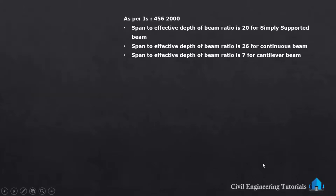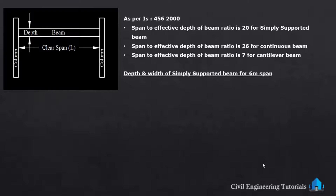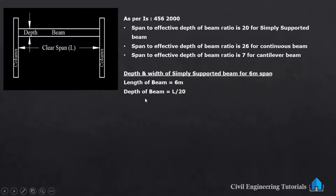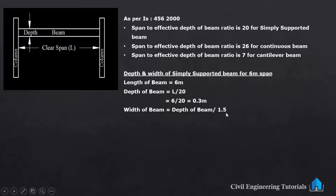Next, depth and width of simply supported beam for 6 meter span. Length of beam is 6 meter. Depth of beam is L by 20, so 6 divided by 20 is 0.3 meter. Width of beam is depth divided by 1.5, so 0.3 divided by 1.5 gives 0.2 meter. This is for 6 meter span simply supported beam.